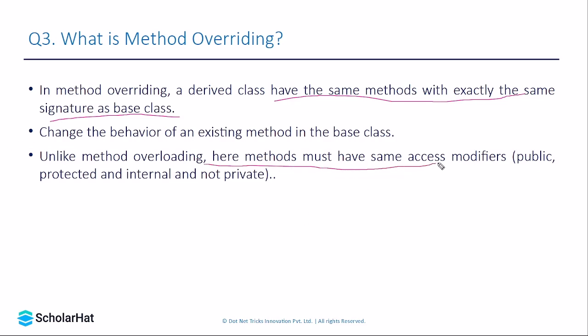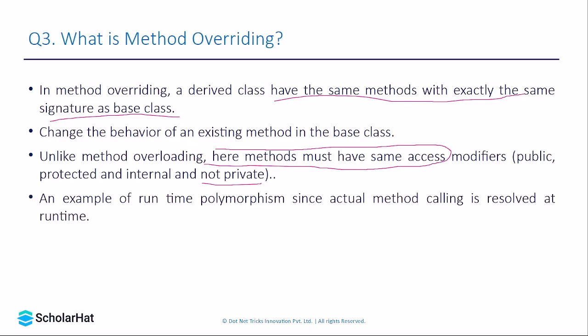A good interview question: what is the prerequisite for method overriding? The answer is that there should be a base class and a derived class, and the method to be overridden should have the same access modifier — public, protected, or internal. Private will not work because private means the method is accessible only within that particular class. Method overriding is an example of runtime polymorphism, where the actual method call is resolved at runtime.